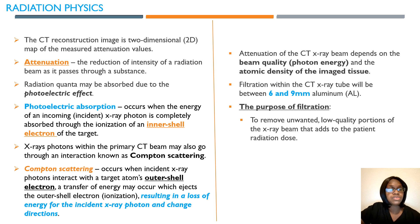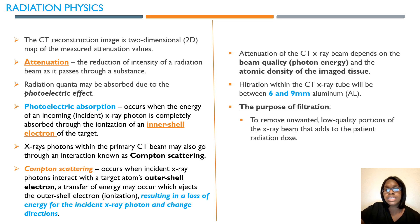X-ray photons within the primary beam may also go through Compton scattering, which is whenever an incident x-ray photon interacts with an outer shell electron. This results in a loss of energy from that incident x-ray photon because it changes directions. Also remember that the filtration within the CT x-ray tube is going to be between 6 and 9 millimeters aluminum. The purpose of filtration in CT is to remove unwanted low-quality portions of the x-ray beam that add to the patient radiation dose.